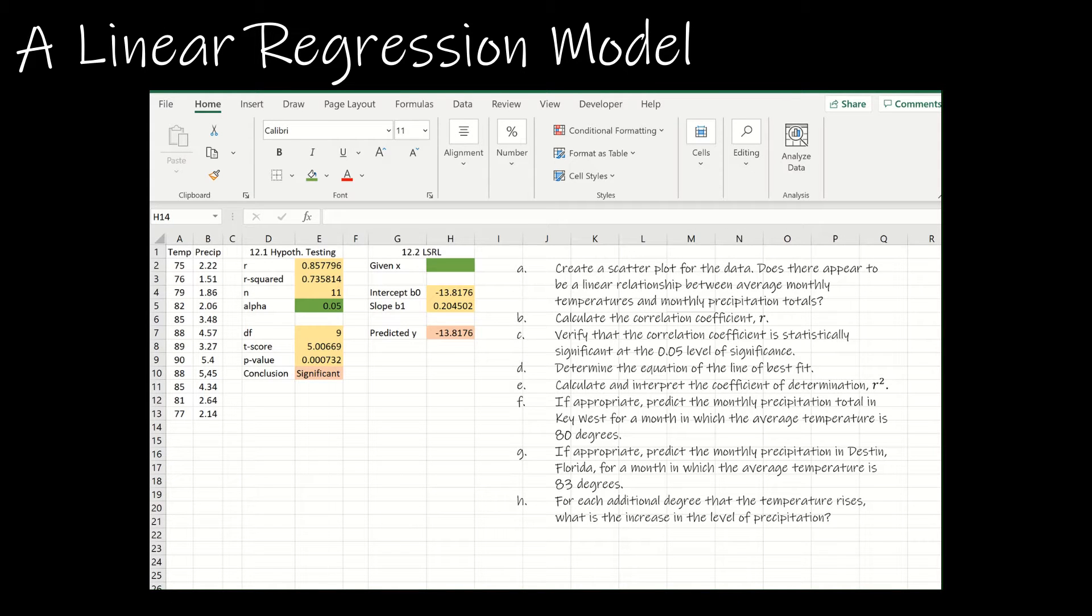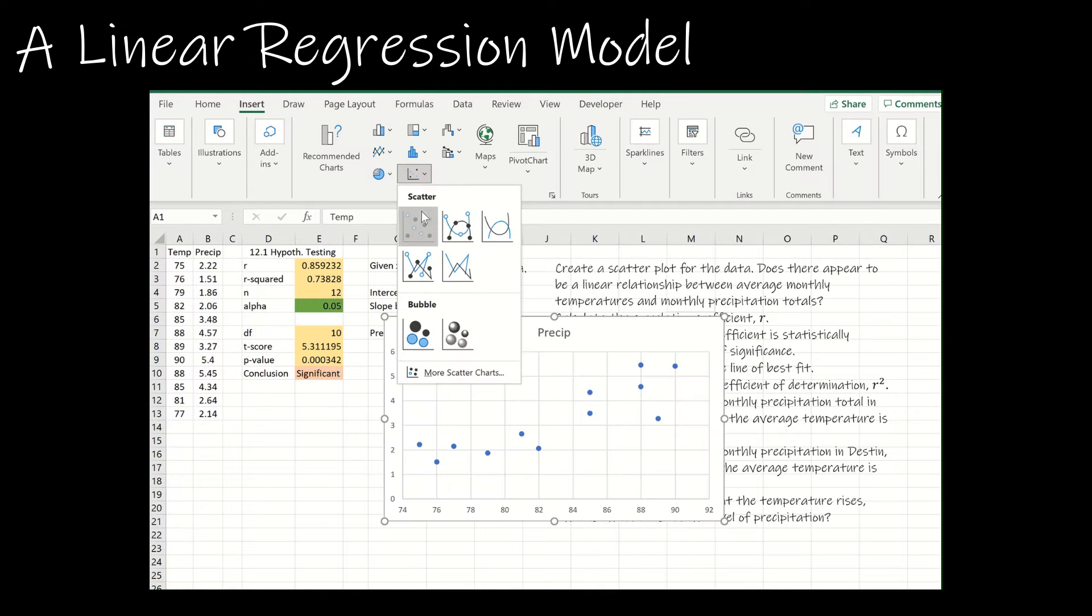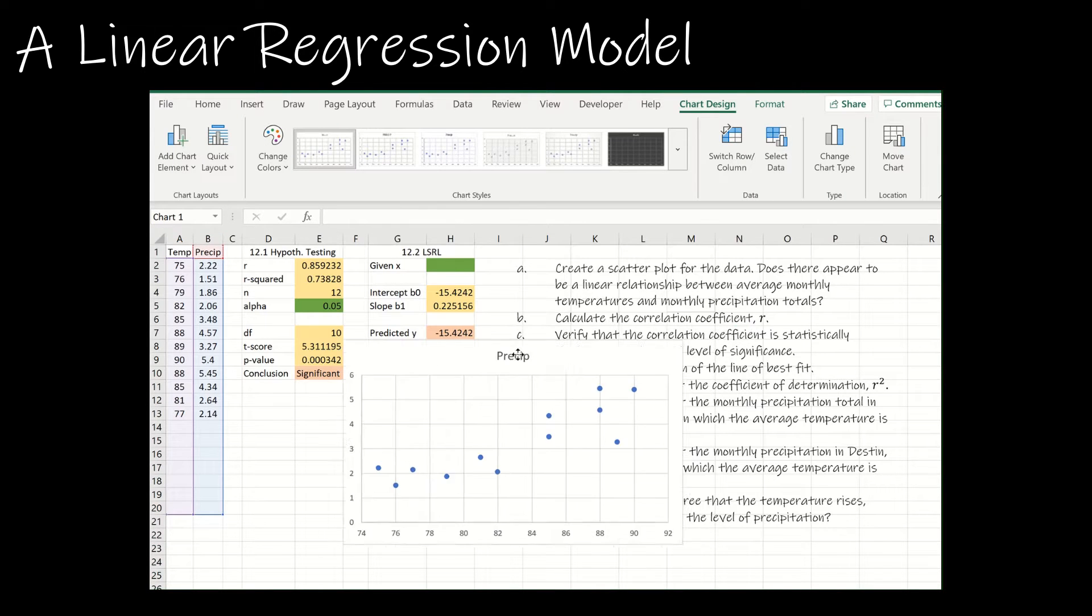Okay, so all I've done is copied over the data. Again, all of this data can be found in the Chapter 12 Excel data spreadsheet. It looks like I made an error right here that should be 5.45. So what I'm going to do now is I'm going to start working through all of the questions. So A says create a scatterplot. So I'm going to go to Insert, Scatterplot, and then it creates a scatterplot.